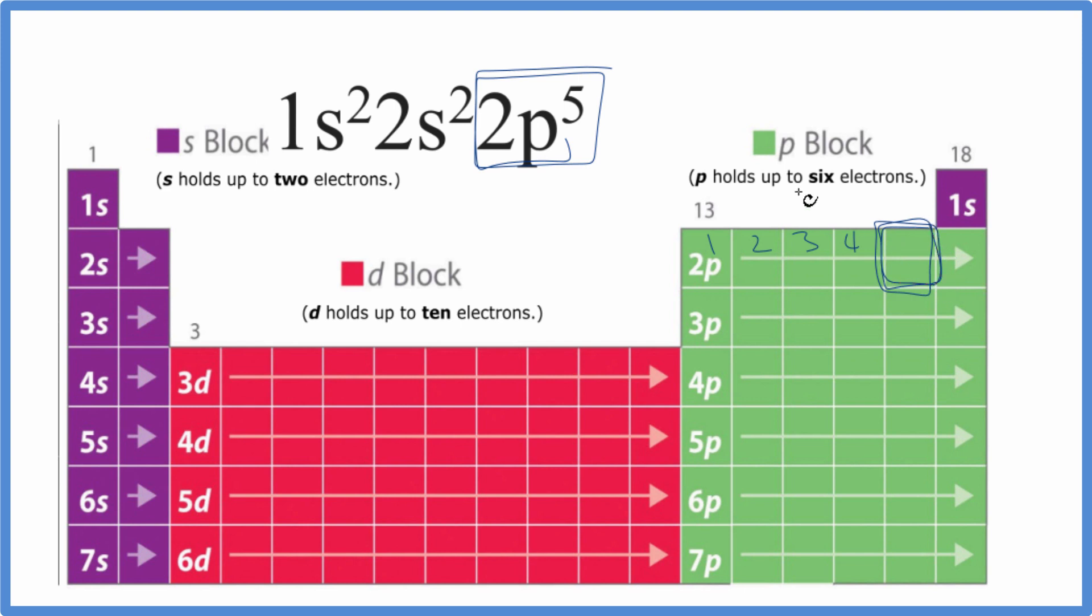So this element right here will have the electron configuration 1s²2s²2p⁵. Let's go back to the periodic table with the elements written in and see which element we have.